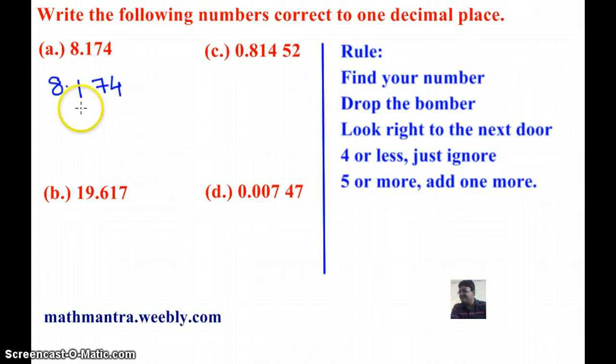8.174. The first thing we do is circle the number that I need to round off. And in our case, it's one decimal place. So I'm going to circle one here because it is at the first decimal place.